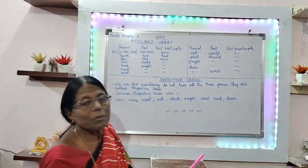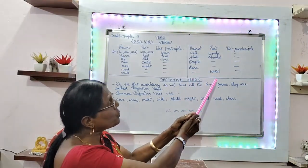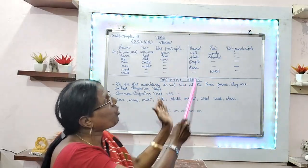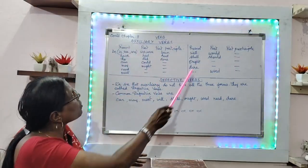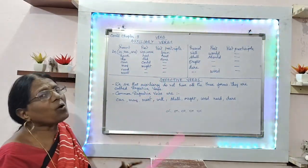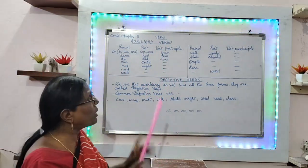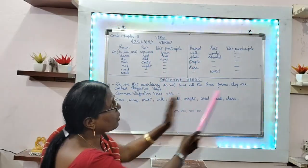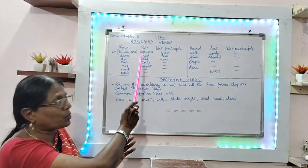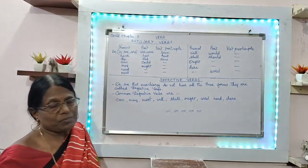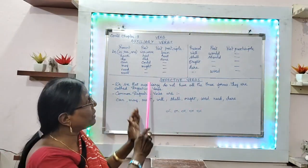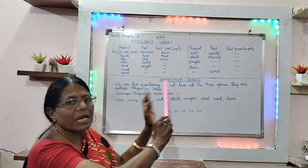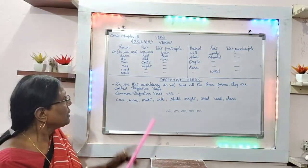'Used' is only past tense — it doesn't have a present form or past participle form. And these are all called auxiliary verbs, and we do call them defective verbs. We see that some auxiliary verbs do not have all three forms — they are called defective verbs. Verbs that are unable to be given past and past participle forms are called defective verbs.